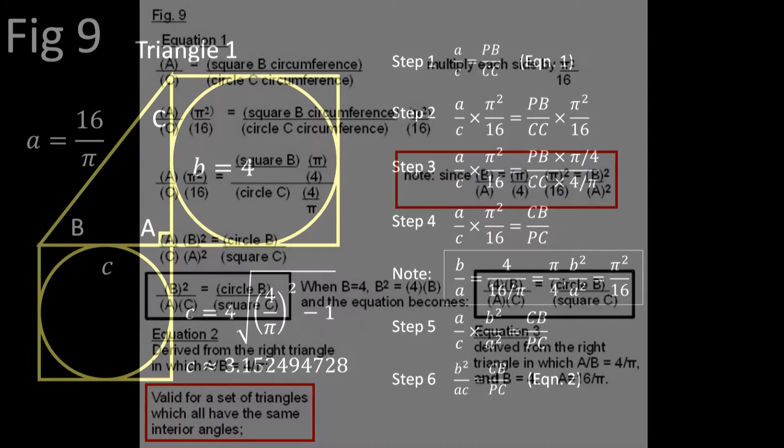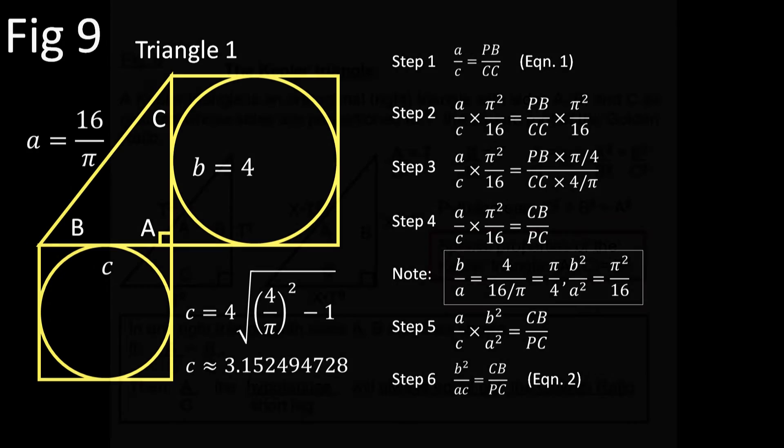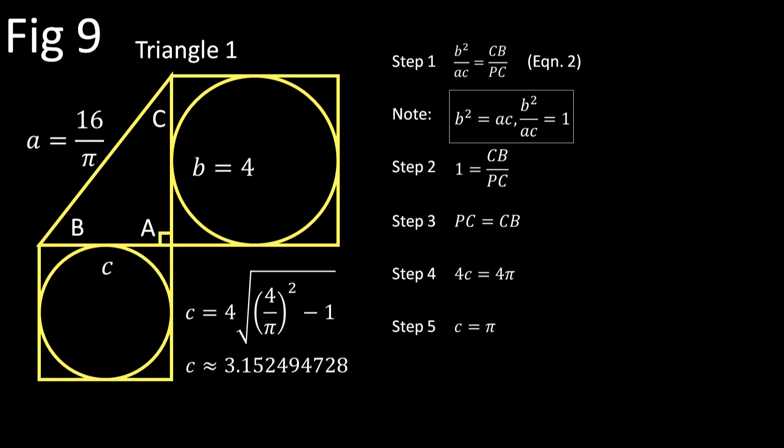But of course Wolham knew that. Now take a close look at Equation 2—déjà vu all over again, right? Where have we seen something like this before? Well, back in Part One, and repeated in Figure 6 in Part Two, Wolham gives us the special property for Kepler triangles: a × c = b². Well that would make b² / (a × c) equal to 1, wouldn't it? It would then directly follow that the length of side c is equal to π.